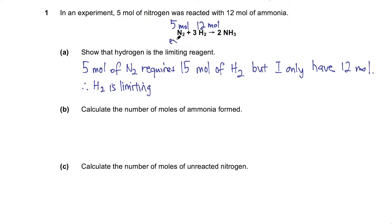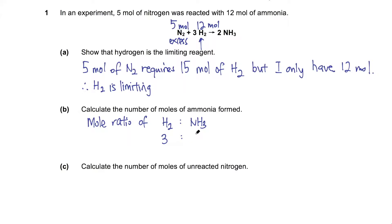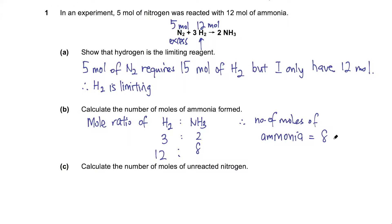To calculate the amount of product, always base it on the limiting reactant. Now that I know nitrogen is in excess, I look at the limiting reactant hydrogen to calculate the number of moles of ammonia. The ratio of H₂ to NH₃ is 3:2, so 12 moles of H₂ will form 8 moles of NH₃. Therefore the number of moles of ammonia equals 8 moles.